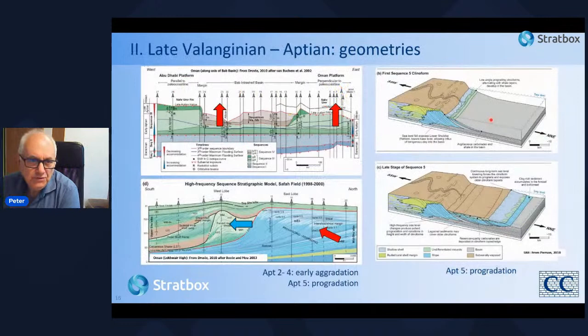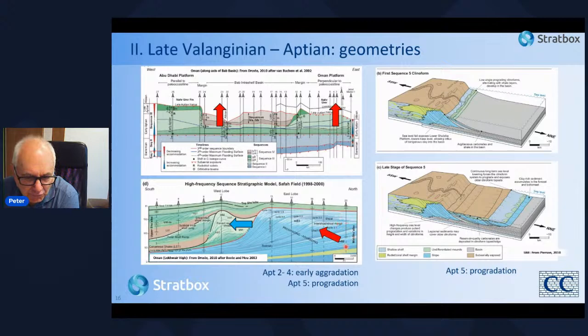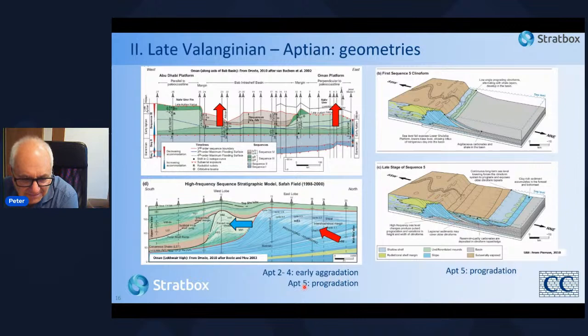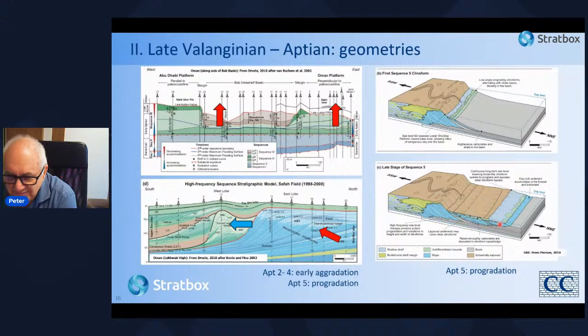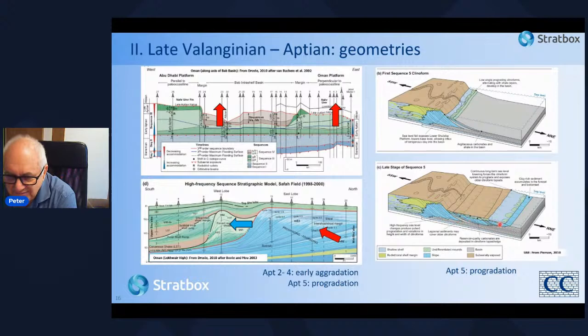We're seeing a large variation of sedimentary geometries. From Aptian cycles 2 to 4 we get initial aggradation building up the platform margin, then in the final cycle — Aptian 5 — there is a major downshift of the sedimentary sequences with a sea level drop. The platform margin is exposed, with some introduction of clastics, and the carbonate system then migrates into shallow water down the BAB basin margins producing prograding and downstepping clinoforms.